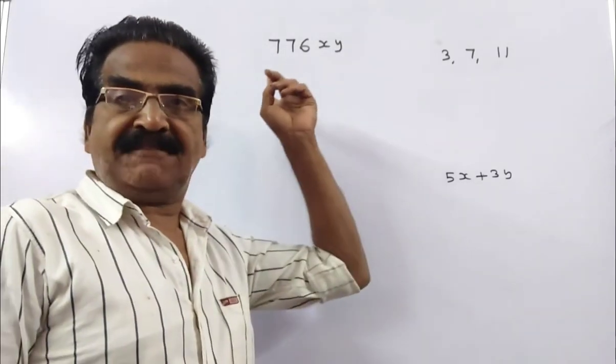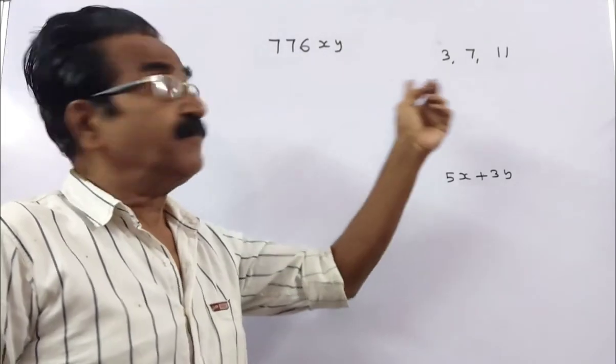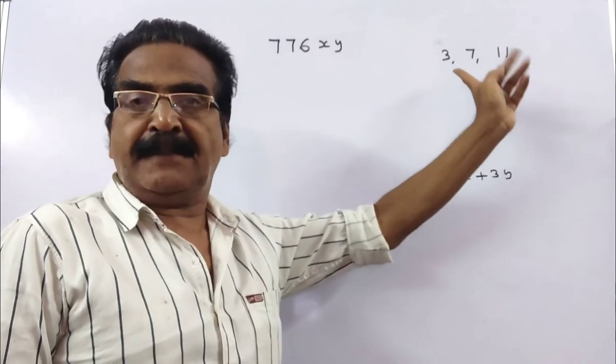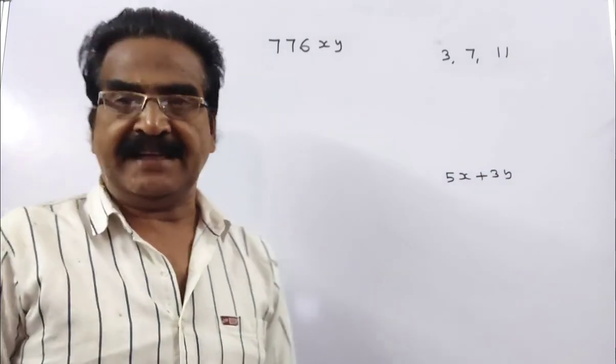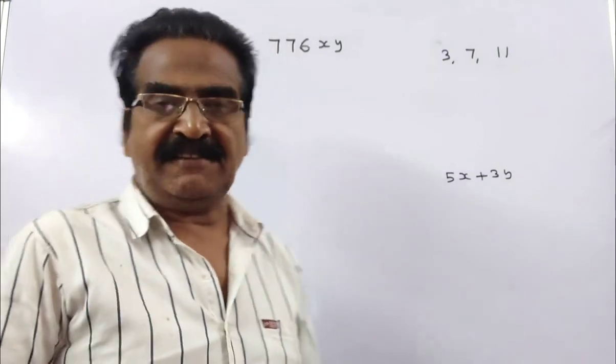Friends, a 5-digit number 776XY is divisible by 3, 7, and 11. Then what is the value of 5X plus 3Y?